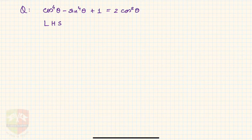The identity given is cos⁴θ - sin⁴θ + 1 = 2cos²θ.